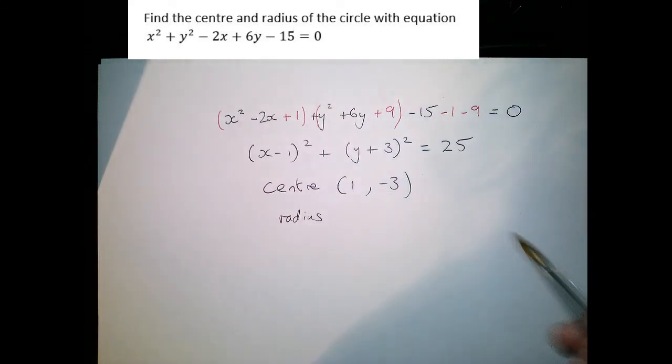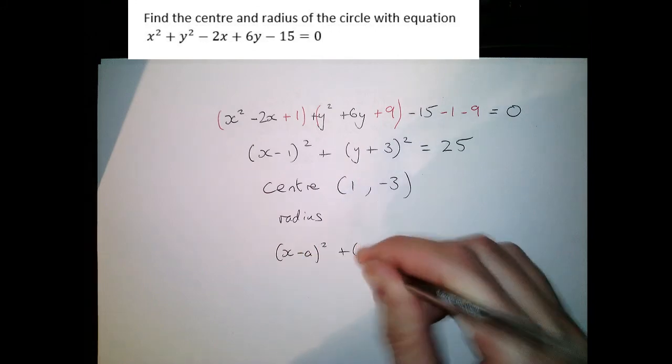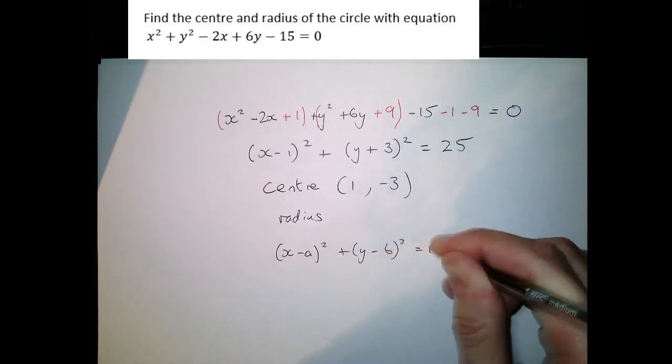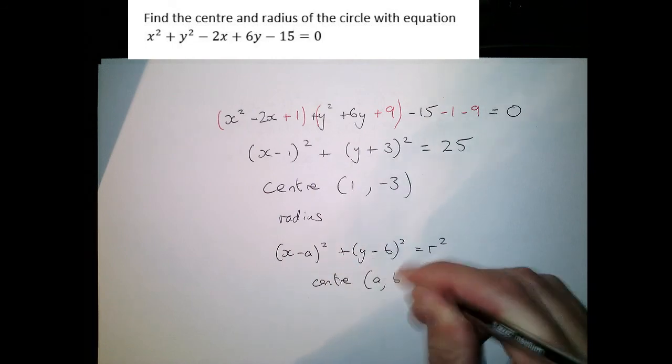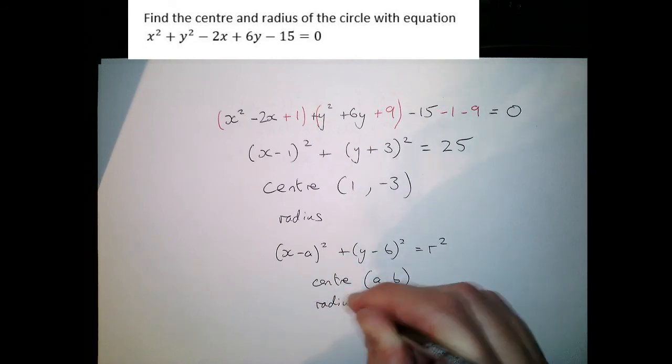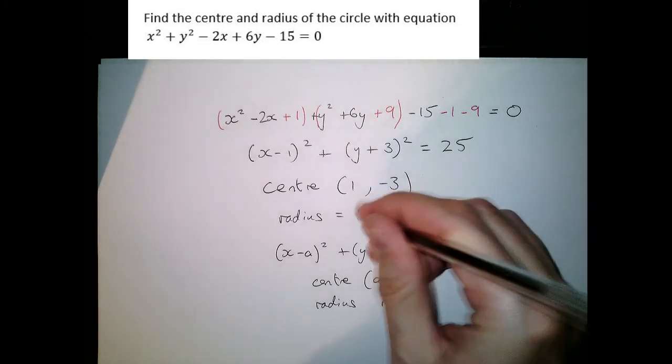Remember that the formula for our circle is x minus a squared plus y minus b squared is r squared, that's centre ab and radius r, so our radius here will be 5.